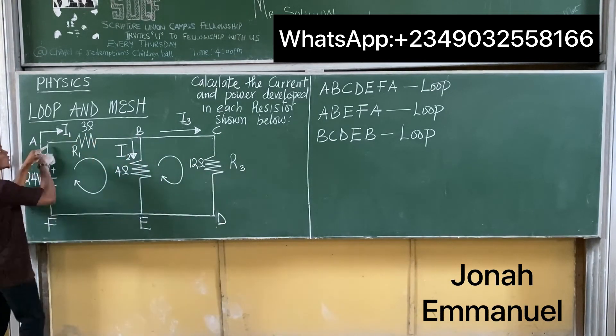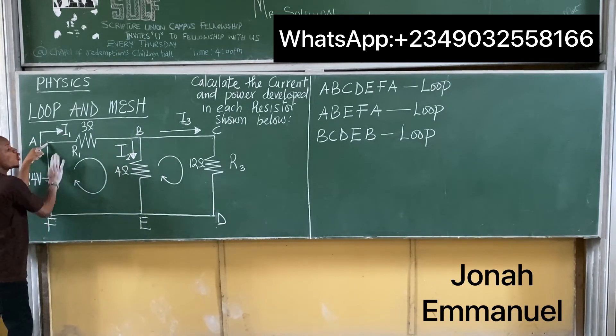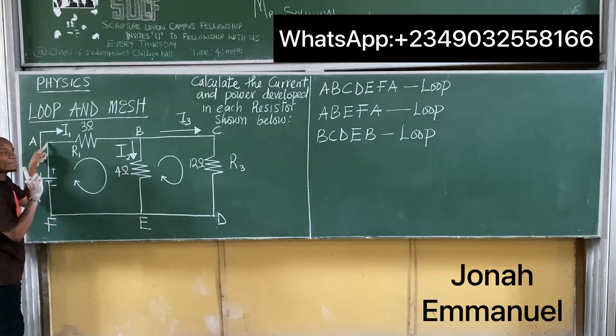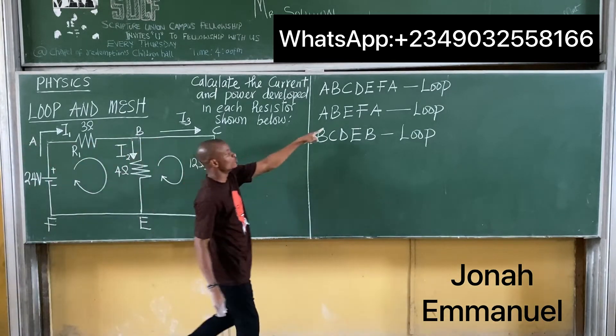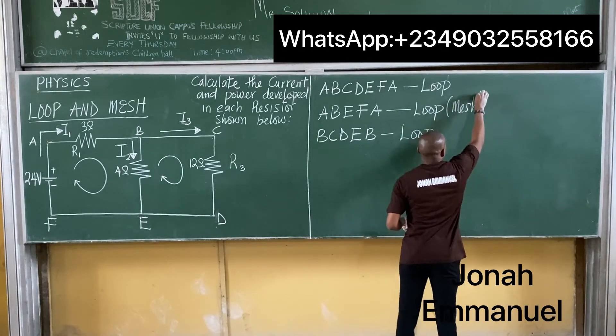So this one here, A, B, E, F, A. That one has no other loop within it. It's called a mesh. This one is also a mesh.